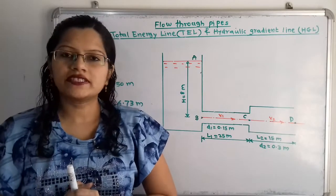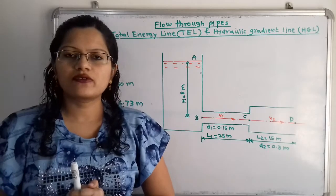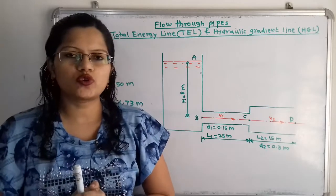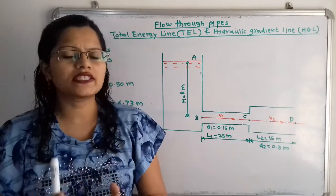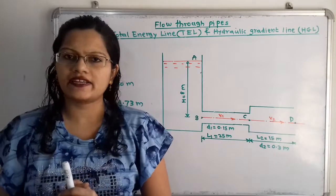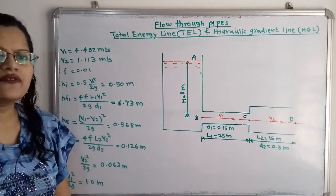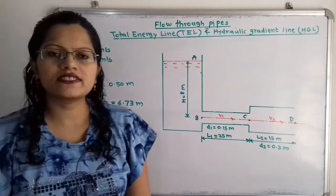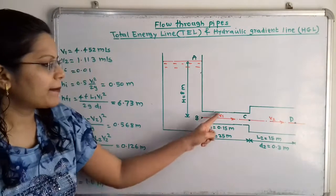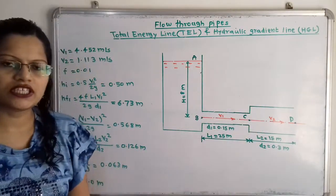Hello friends, this is Priyanka. Today we are going to understand how to draw the total energy line and hydraulic gradient line for this given arrangement. If we observe this diagram, here is the pipe having different cross-section areas.